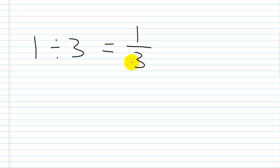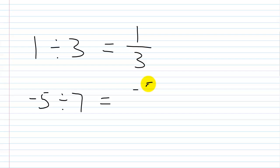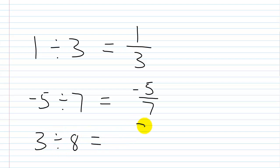As another example, let's say you had something like negative five divided by seven. This would also be a rational number — negative five over seven. And then something like three divided by eight, or three eighths. These would all be what we consider rational numbers.